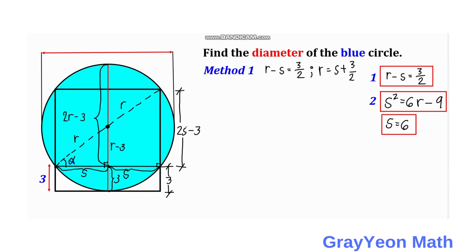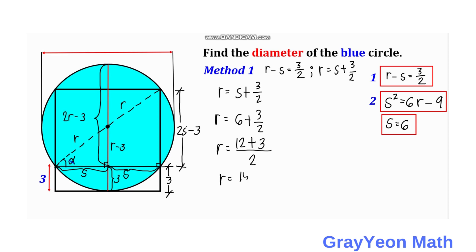Using r equals s plus 3 over 2 with s equals 6: r equals 6 plus 3 over 2, which gives r equals 12 plus 3 over 2, so r equals 15 over 2. The diameter d equals 2r equals 2 times 15/2, and we get d equals 15 units. That is our answer for the first method.